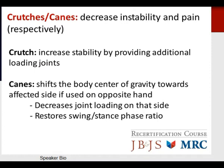Crutches and canes decrease instability and pain respectively. A crutch increases stability by providing additional loading joints, whereas a cane shifts the body center of gravity toward the affected side when used on the opposite hand. This results in decreased joint loading on that side and can help restore the swing-stance phase ratio of gait.